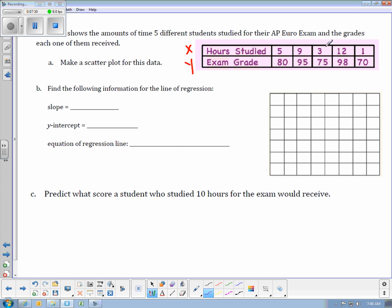My x values, I start at 1 and go up to 12, so I think I'm going to start here and count by 2. So 2, 4, 6, 8, 10, 12, that'll give me enough space.